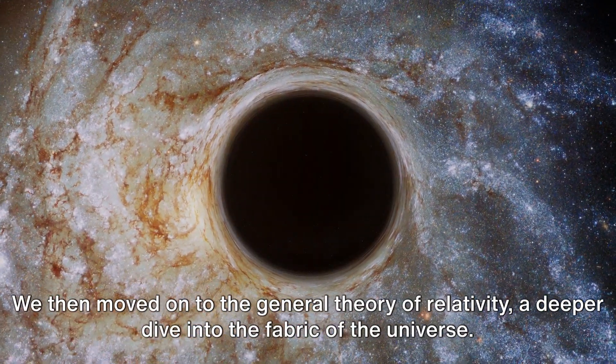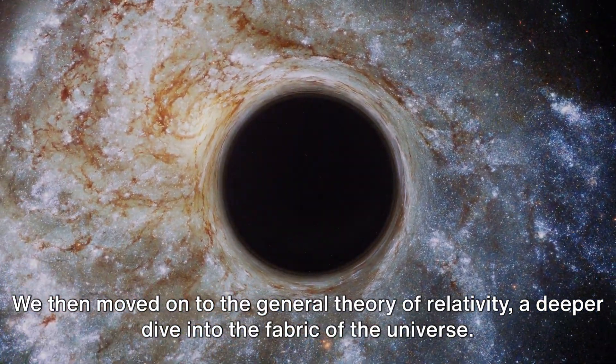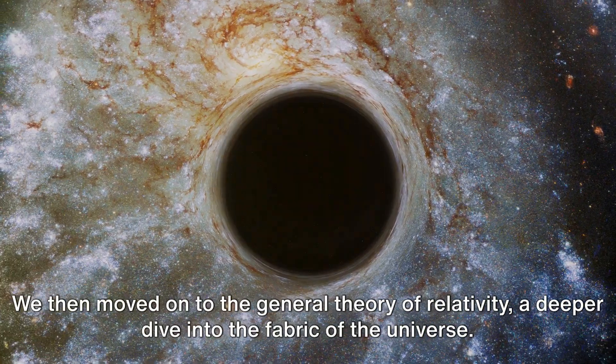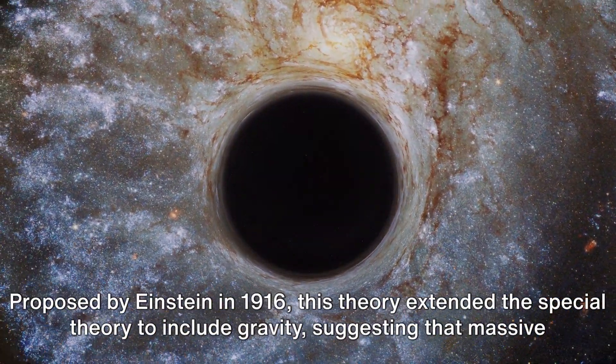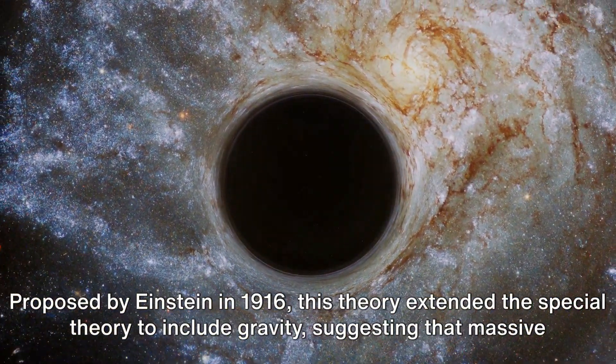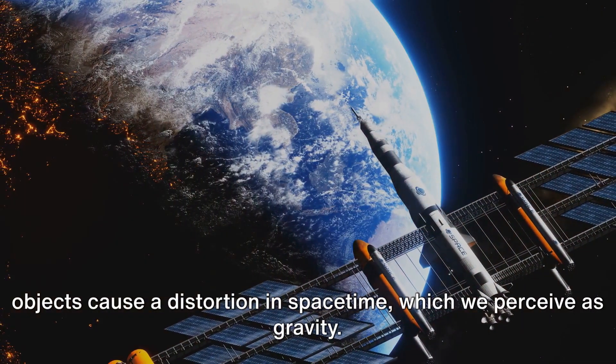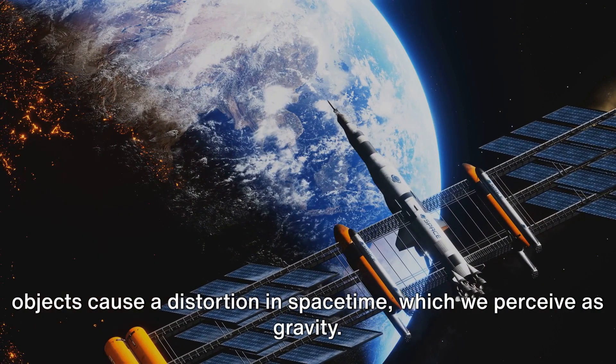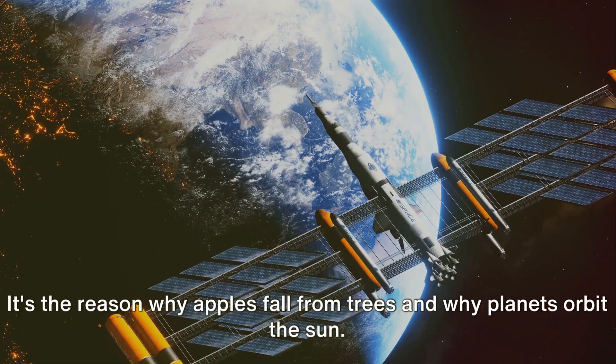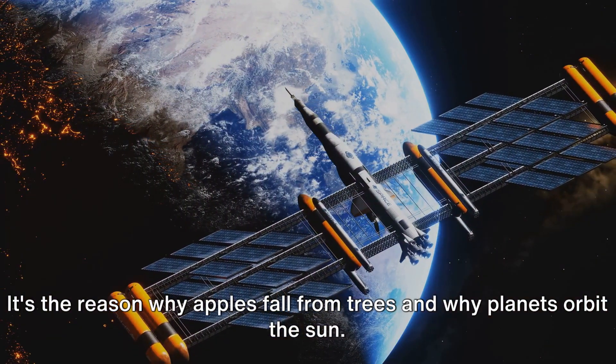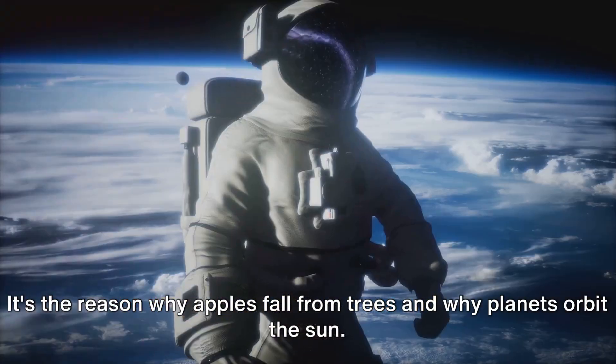We then moved on to the general theory of relativity, a deeper dive into the fabric of the universe. Proposed by Einstein in 1916, this theory extended the special theory to include gravity, suggesting that massive objects cause a distortion in space-time, which we perceive as gravity. It's the reason why apples fall from trees and why planets orbit the sun.